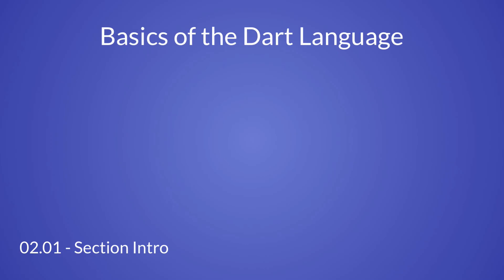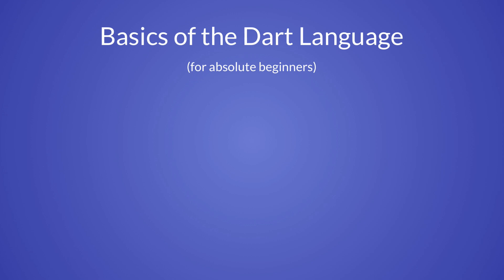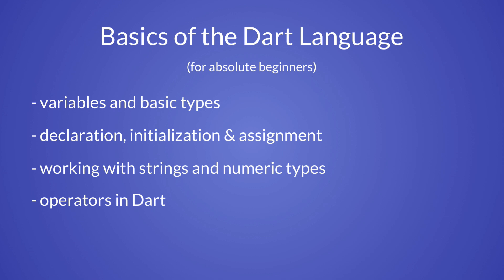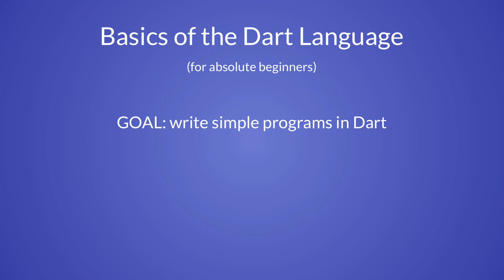In this section, we will learn all about the basics of the Dart language. This specific section is for absolute beginners, and this means that you can follow it even if you've never written a single line of code. We will cover fundamental concepts such as variables and basic types, the difference between initialization and assignment, working with strings and numeric types, and the various operators available in Dart. By the end of this section, you will be able to write simple programs in Dart, and you'll find exercises to practice what you've learned along the way.